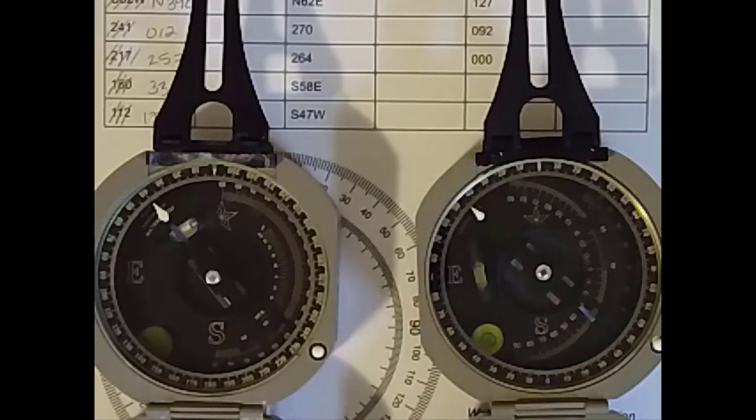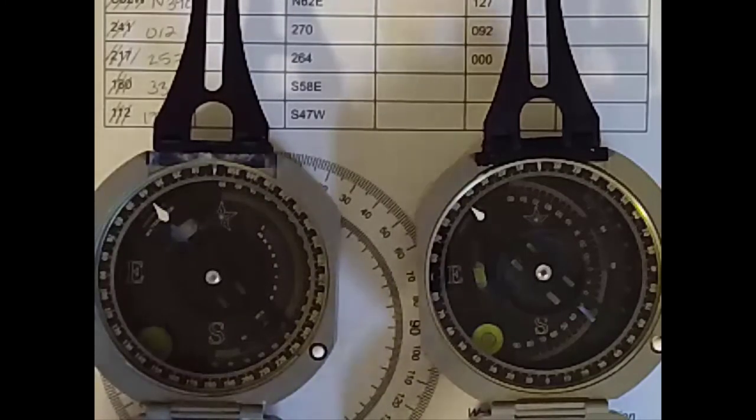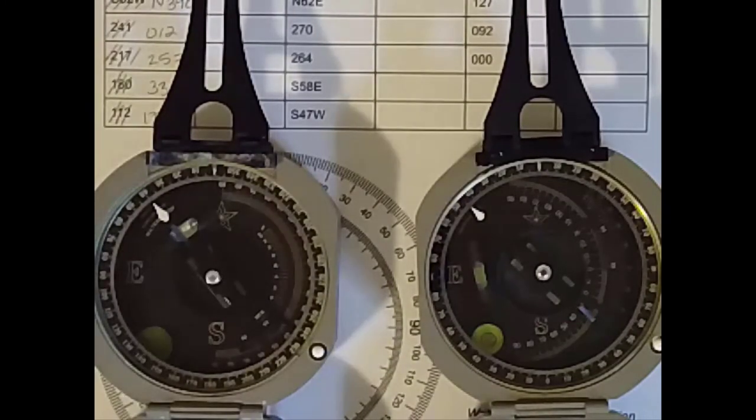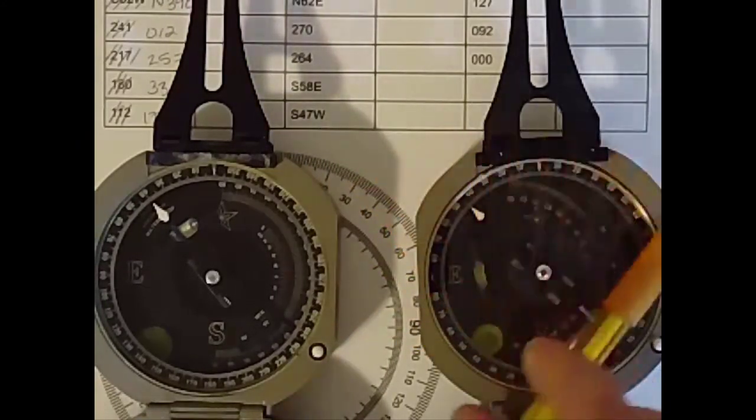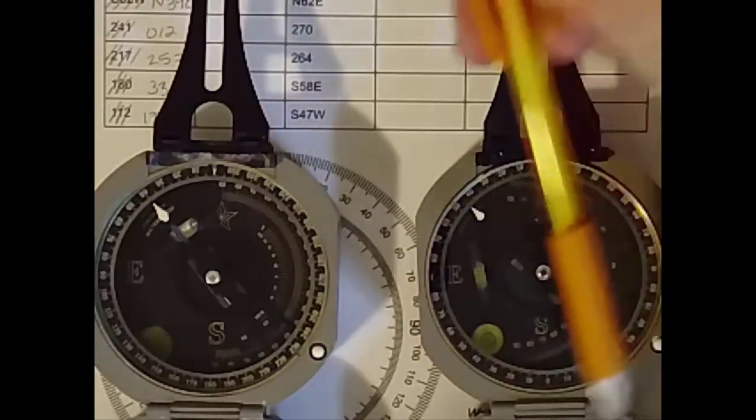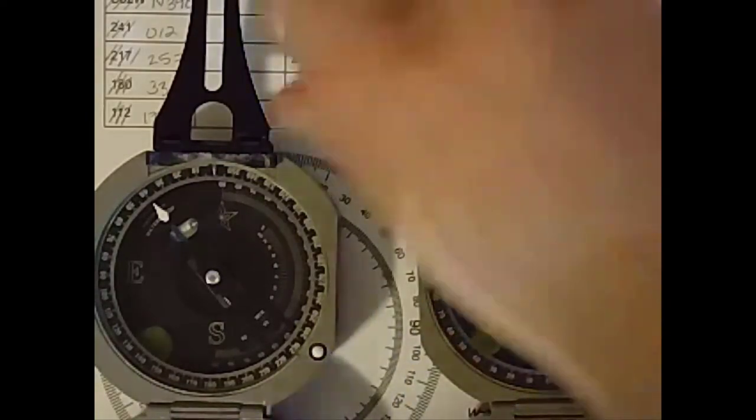In a quadrant compass, though, we've kind of given ourselves two starting points, north and south. So we're saying, how far from north we are, and in what direction, and how far from south we are, and in what direction.